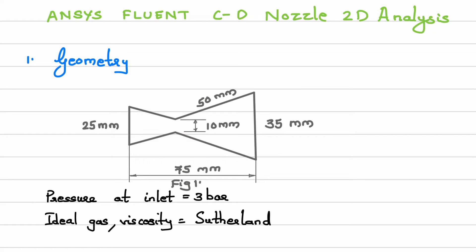This session is an extra beyond-the-syllabus session where we are going to study ANSYS Fluent software. We are going to see the software and in it we are going to analyze a convergent-divergent nozzle. We'll do a 2D analysis for that nozzle — it will not be a three-dimensional analysis. So first we'll go through the geometry: what type of geometry we are going to draw in the software.